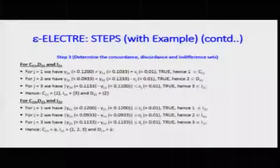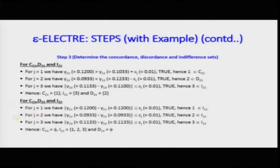Here we are calculating C21, D21, and I21. Taking epsilon as 0.01 for all cases, for J=1 we compare Y21 with respect to Y11 and find that J=1 falls in the concordance set. For J=2, it falls in the discordance set, and for J=3, it falls in the indifference set. So C21, D21, and I21 have the values marked in the yellow highlight.